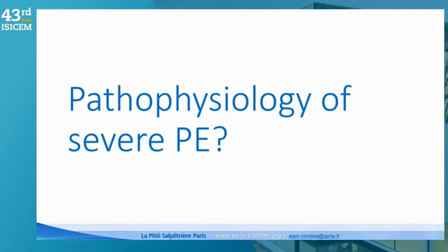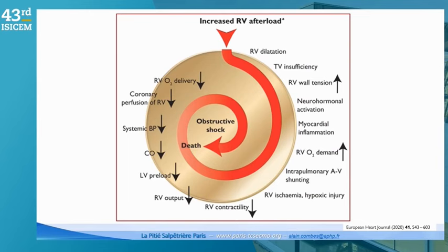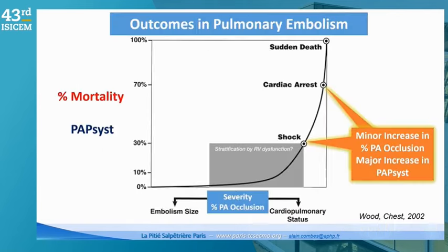Let's now define the pathophysiology of severe disease. This is the classical vicious circle leading from PE to severe shock. It begins with an increase in afterload, which increases pressures within the right ventricle, causing it to dilate. When the right ventricle dilates, it compresses the left ventricle within the pericardium, which leads to a decrease in cardiac output. This vicious circle causes a drop in systemic blood pressure and decreased perfusion of all vital organs, leading to less oxygen delivery — ultimately resulting in massive obstructive shock and death.